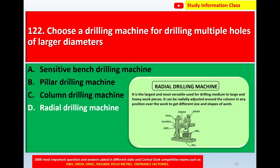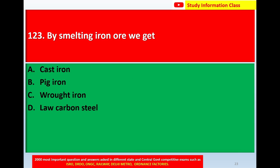The radial drilling machine is the largest and most versatile, used for drilling medium to large and heavy workpieces. It can be readily adjusted around the column in any position over the work to get different sizes and shapes. For question 122, the correct answer is Option D: Radial drilling machine.